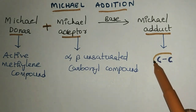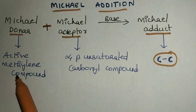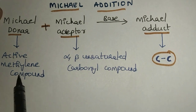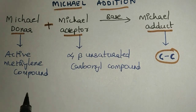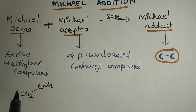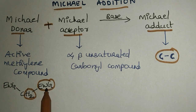The Michael adduct gives rise to a C-C single bond. First, what is a Michael donor and what is a Michael acceptor? A Michael donor is a compound which has an active methylene group. An active methylene group is a CH₂ group attached to two electron-withdrawing groups, which increase the acidity of the hydrogen.